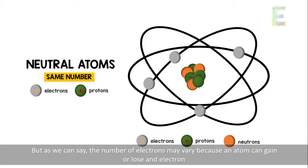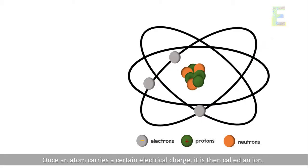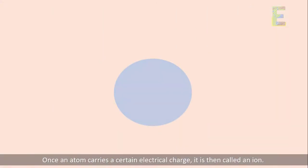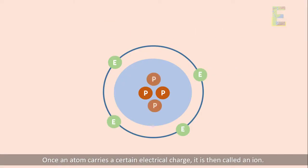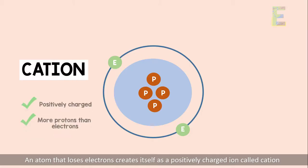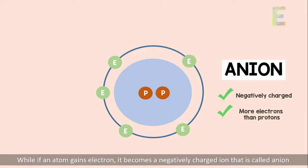But as we can say, the number of electrons may vary because an atom can gain or lose an electron. Once an atom carries a certain electrical charge, it is then called an ion. An atom that loses electrons creates itself as a positively charged ion, called cation. Well, if an atom gains electron, it becomes a negatively charged ion, that is called an anion.